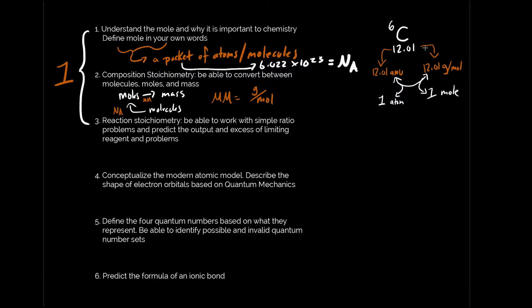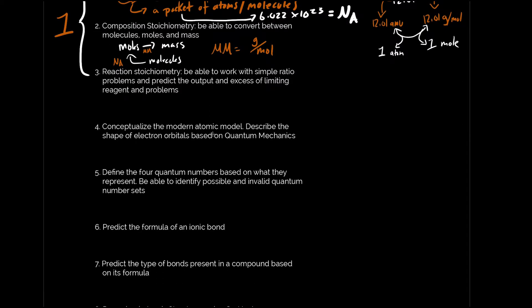Number three is reaction stoichiometry — definitely the hardest part of unit one. I just want to make sure you're able to work with simple ratio problems and predict the output and the excess of limiting reagent problems. You want to be able to not only figure out what the limiting reagent is, but also figure out how much excess is left over — all very important to unit one.